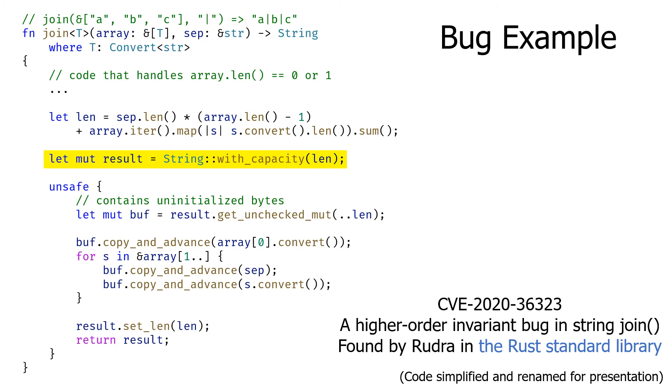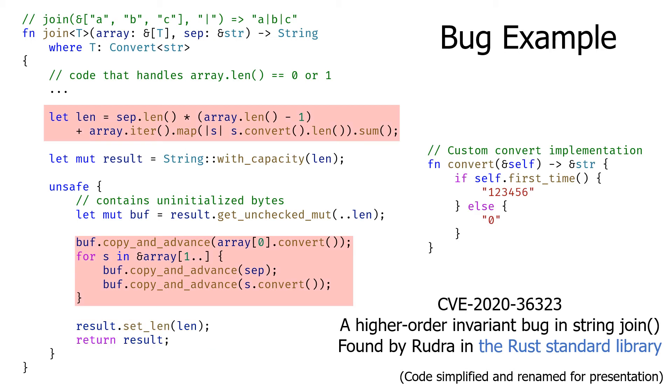Then it allocates a string with that size, creates a view to the uninitialized portion. It then copies the array content by alternating the array contents and the separator to the uninitialized area. Finally, it overwrites the length of the string to indicate that it is fully initialized. The bug here is that the contents of the array are converted twice, for the first time during the length calculation, and for the second time during the actual copy. Here, unsafe code assumes that both conversions return the same result. Hence, if a type that converts to different strings is used, as in the right side of the slide, the join function returns a string that contains uninitialized bytes.